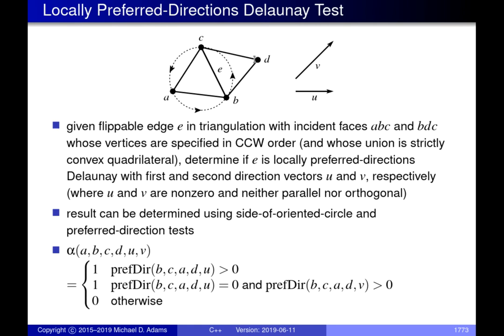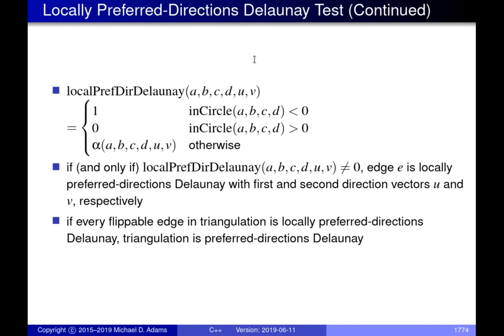Looking at the locally preferred directions Delaunay test, the first two cases are identical to the locally Delaunay test. We do an oriented circle test: if D is outside the circle, the triangulation is Delaunay; if inside, it is not. But unlike before, when D falls exactly on the circle — meaning inCircle(ABCD) equals zero — we only accept it as valid if a magical alpha function equals one.